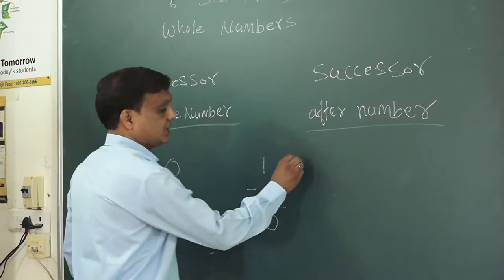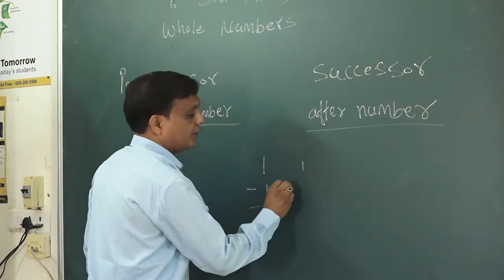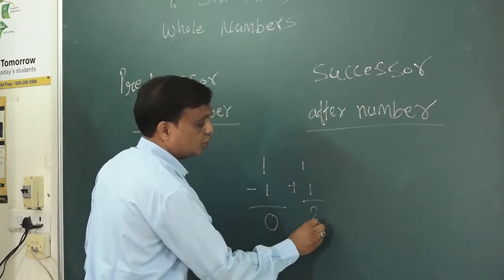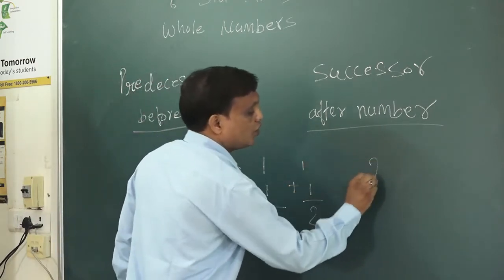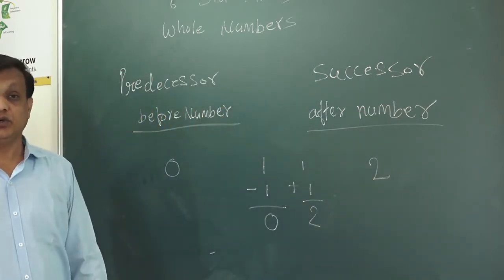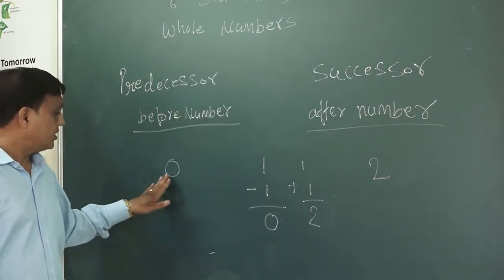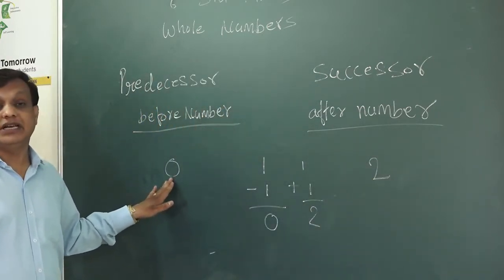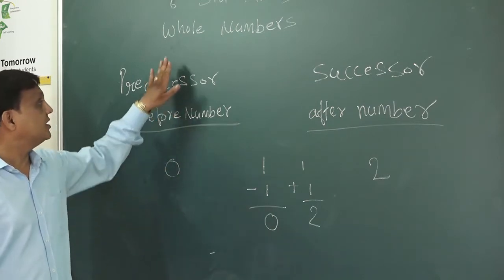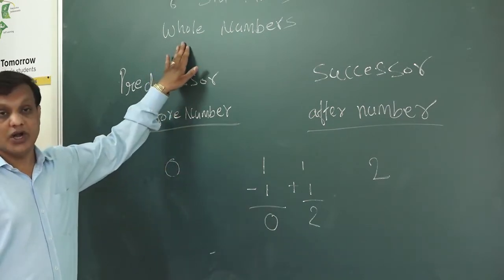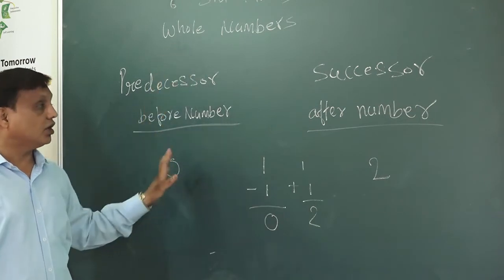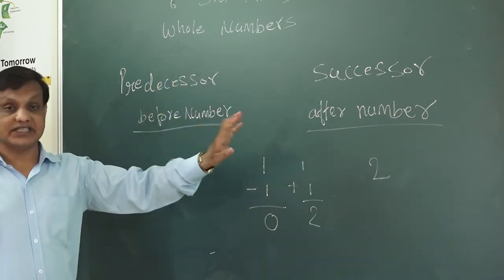What is the successor of 1? Simply you have to add 1 for the successor. So 2 is the successor of 1. Here 0 is helping us. What is 0? The 0 comes under the whole number. So this is called predecessor and successor.